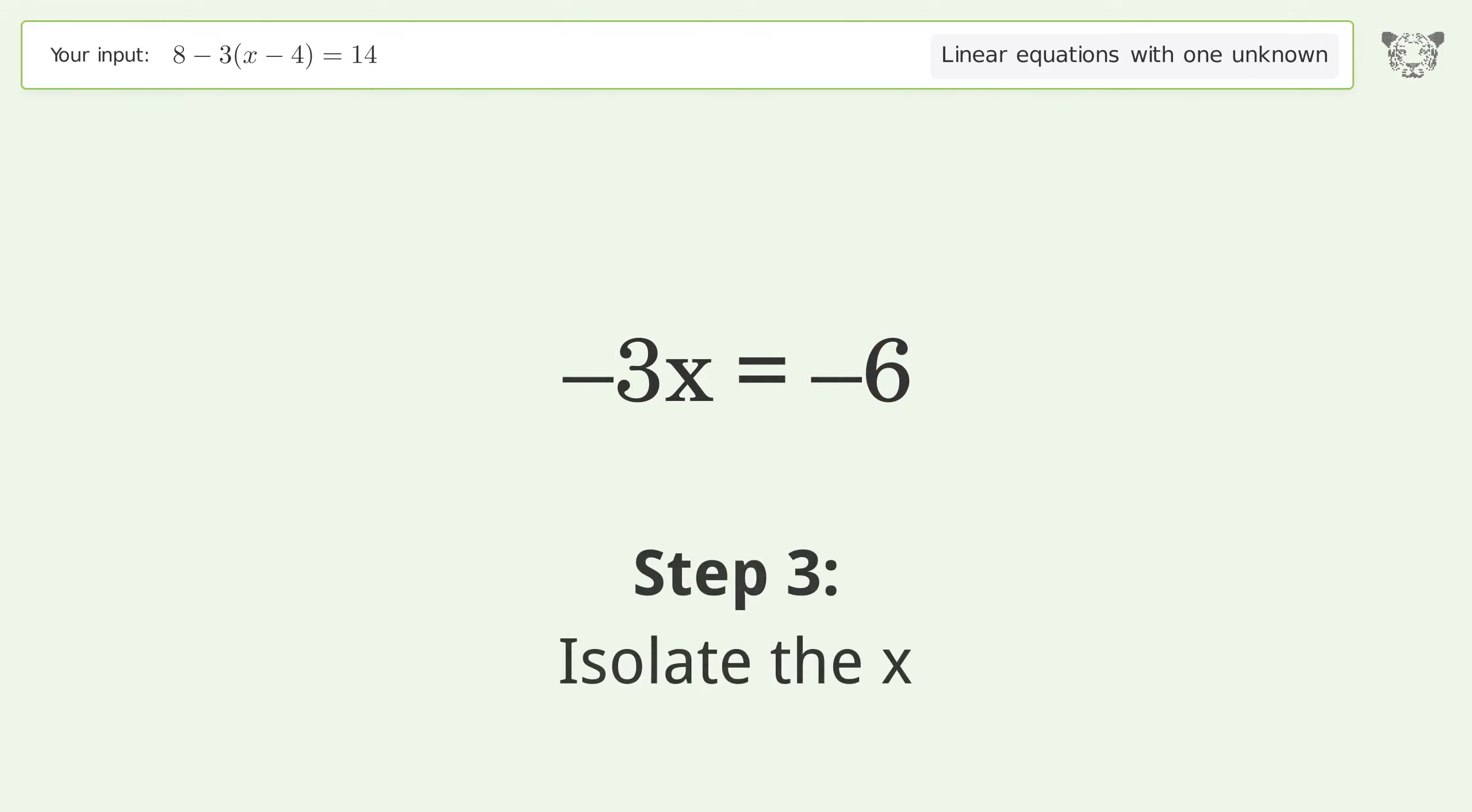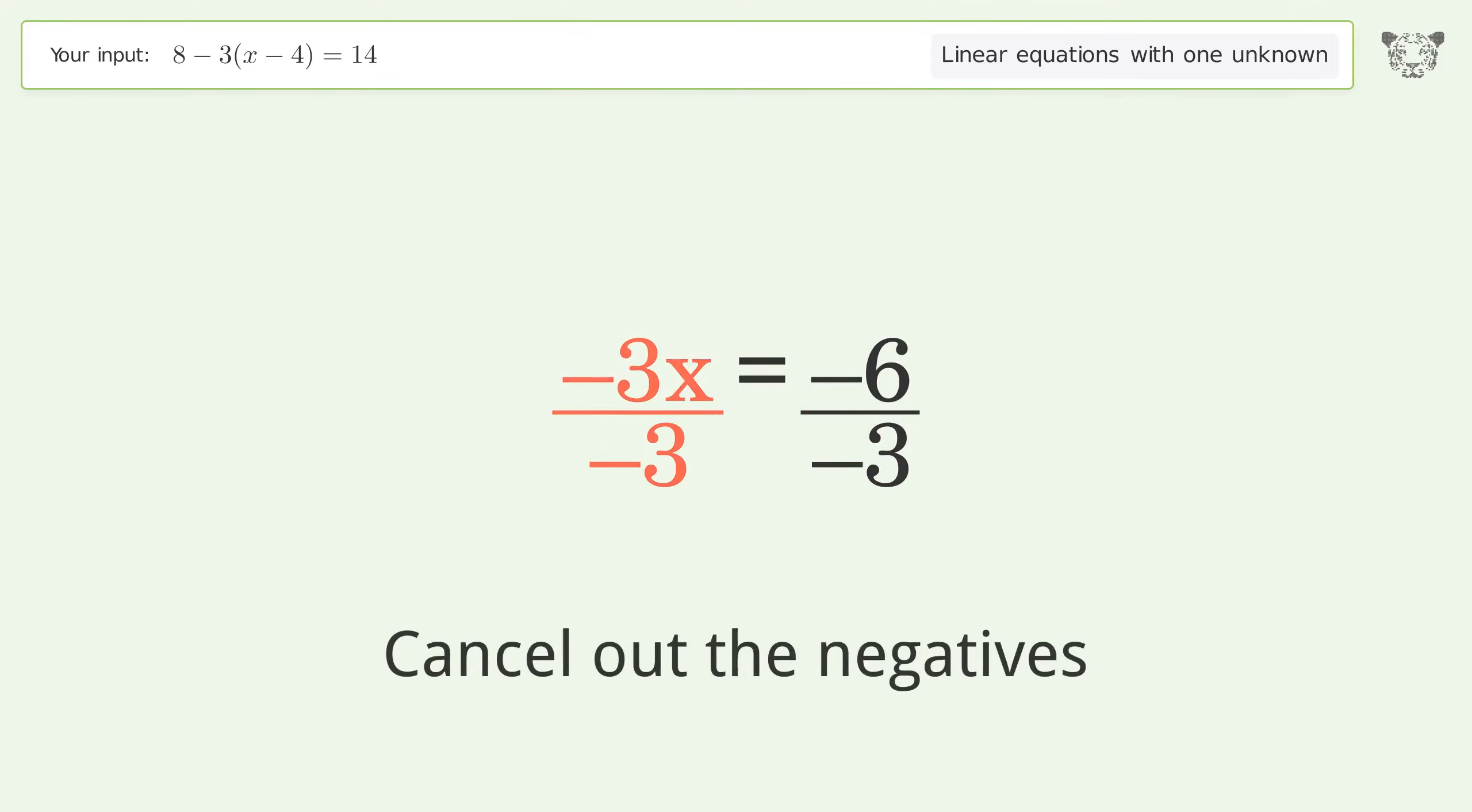Isolate the x. Divide both sides by negative 3. Cancel out the negatives. Simplify the fraction.